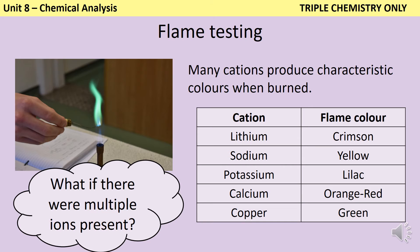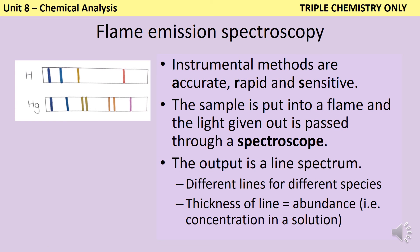One of the biggest problems with flame tests is that if you have more than one cation present, the colours will obscure each other. For instance, if I have a mixture of lithium and potassium, the pale purple lilac colour of the potassium flame would get completely blocked out by that really vibrant crimson colour, so I'd be able to identify that lithium was present but not potassium. To get around this, we can instead employ an instrumental technique called flame emission spectroscopy.